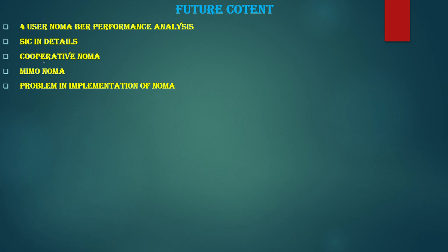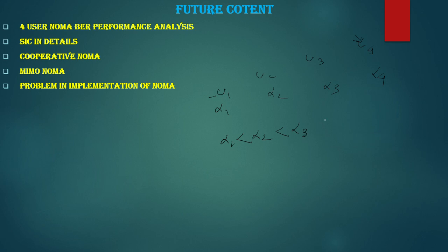I will also show SIC in detail pictorially. There is a concept of cooperative NOMA which I will cover, as well as MIMO-NOMA. I will also cover problems in implementing NOMA in other videos. For four-user NOMA: suppose user 1, user 2, user 3, and user 4 are placed with user 1 closest and user 4 farthest from the base station. Power coefficients α1, α2, α3, α4 are assigned. Since user 1 is the strongest user it will have the lowest power coefficient, so α1 < α2 < α3 < α4.